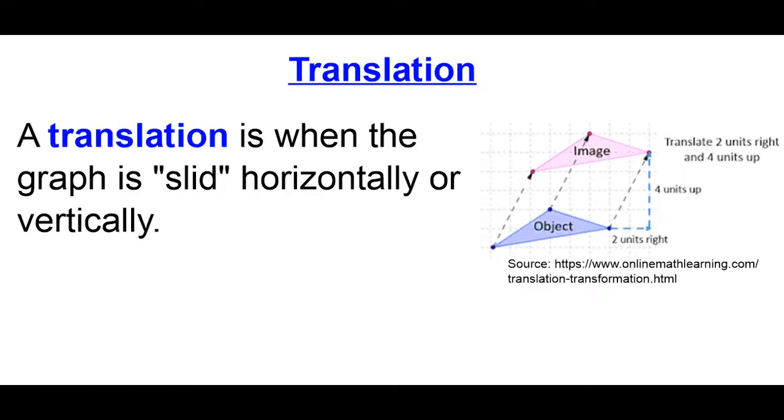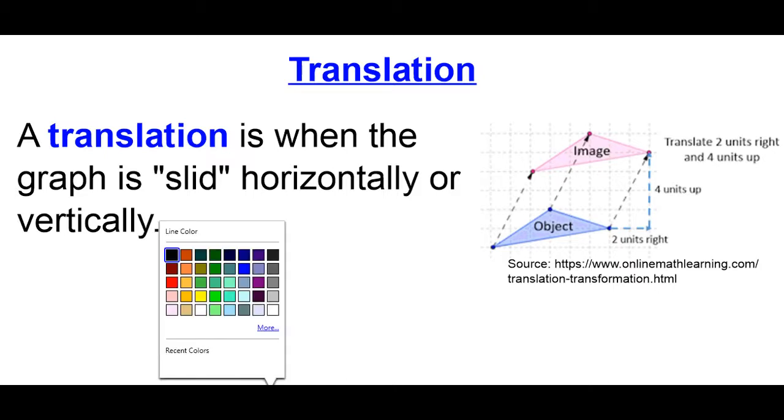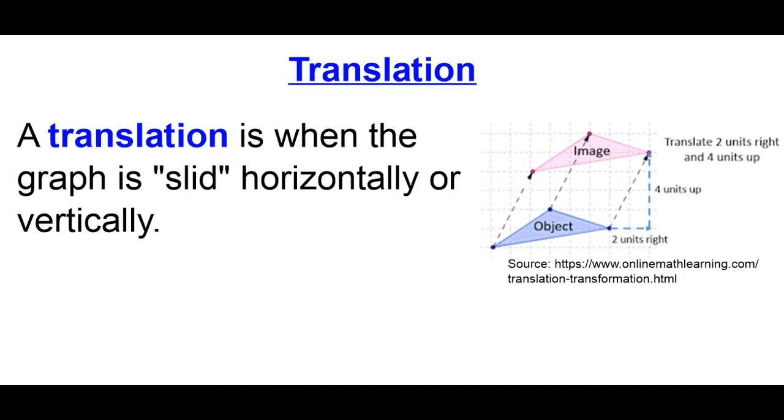So, the first transformation is something called a translation. A translation is when the graph is slid horizontally or vertically. One thing people remember is we just say that this is a slide. Sometimes people forget the word translation and just use the word slide.